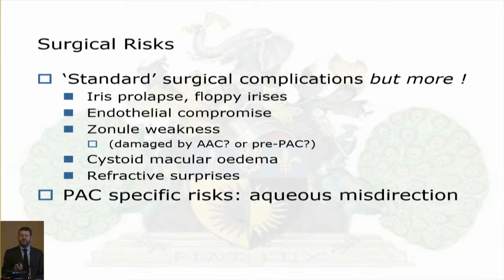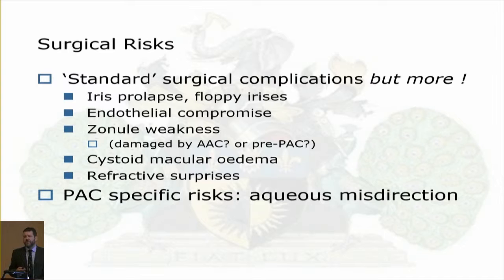For very short eyes, surgical risks are greater: floppy irises, lower corneal endothelial cell counts, greater rate of zonular weakness — possibly related to pseudo-exfoliation — cystoid macular edema, refractive surprises, and the feared risk of aqueous misdirection. So we may favor an initial iridotomy over lens extraction for very short eyes despite the EGLE trial results.